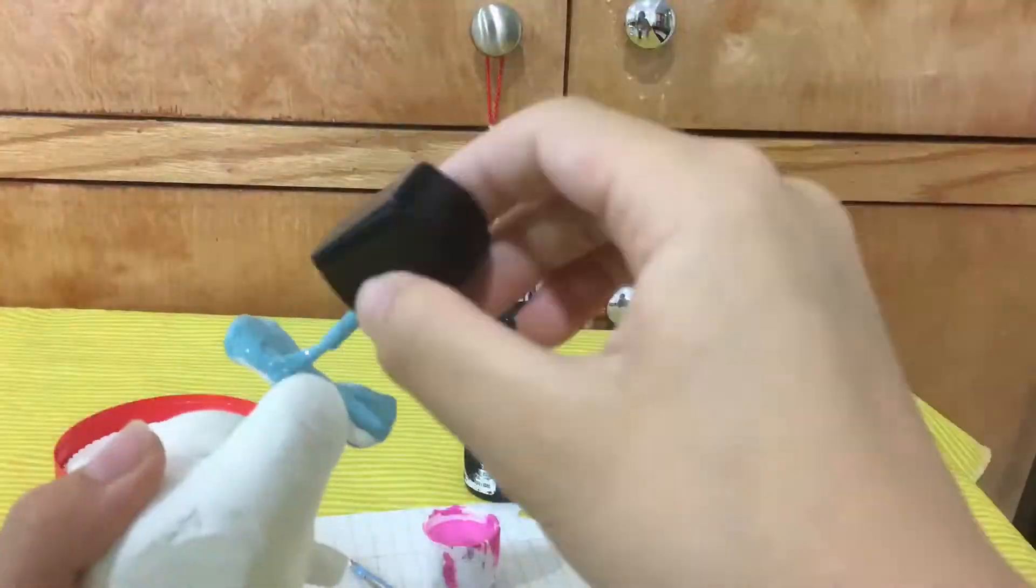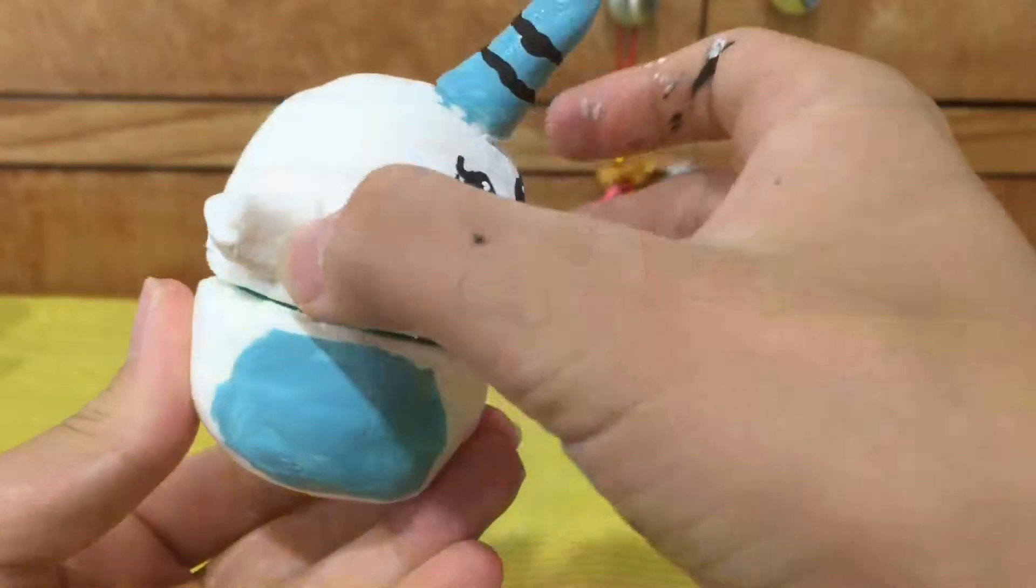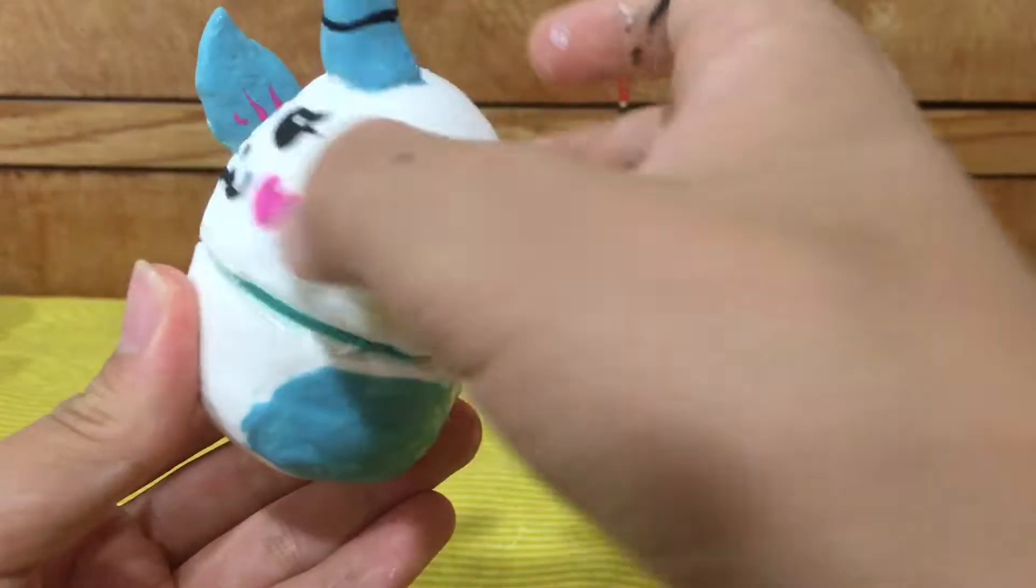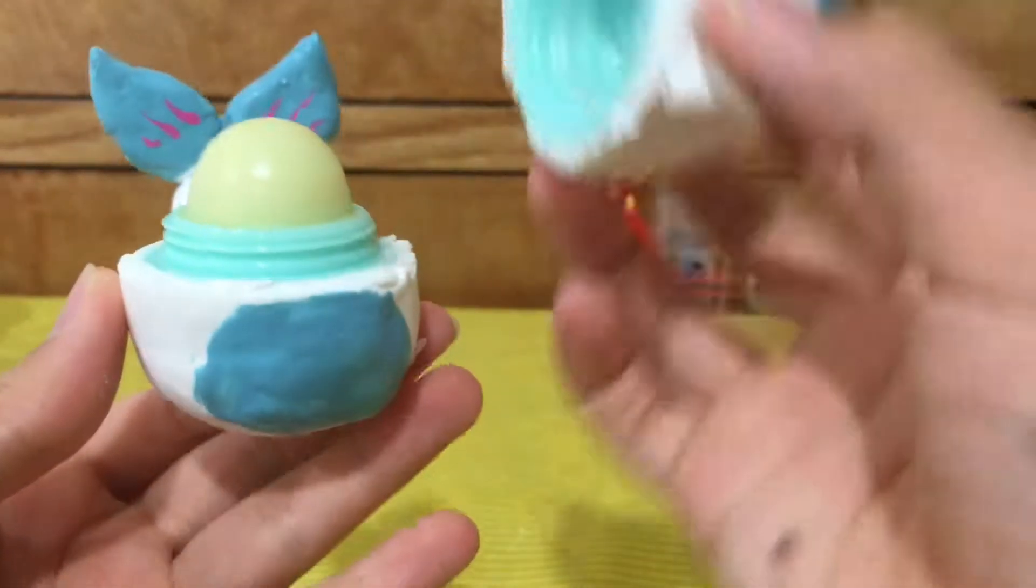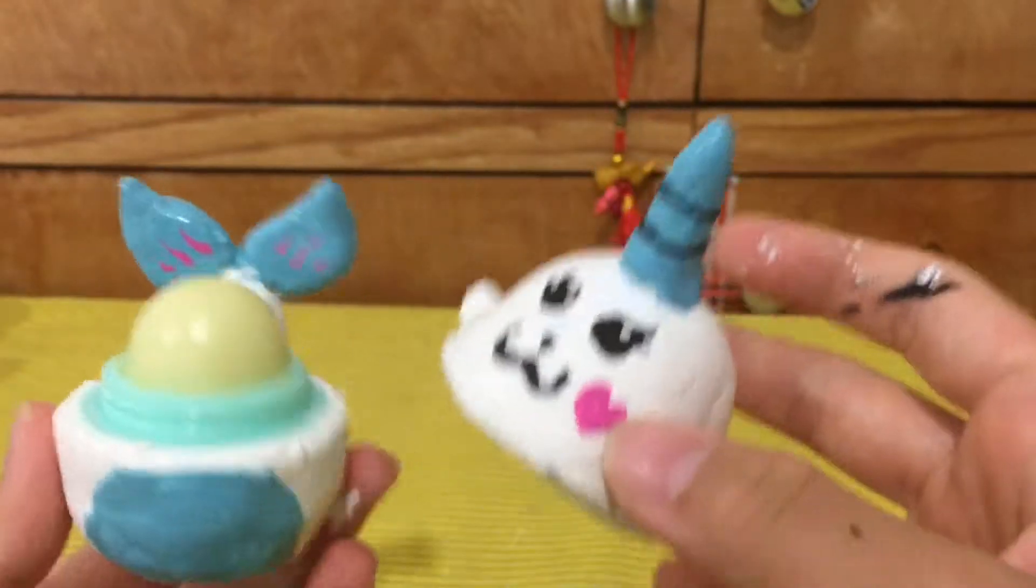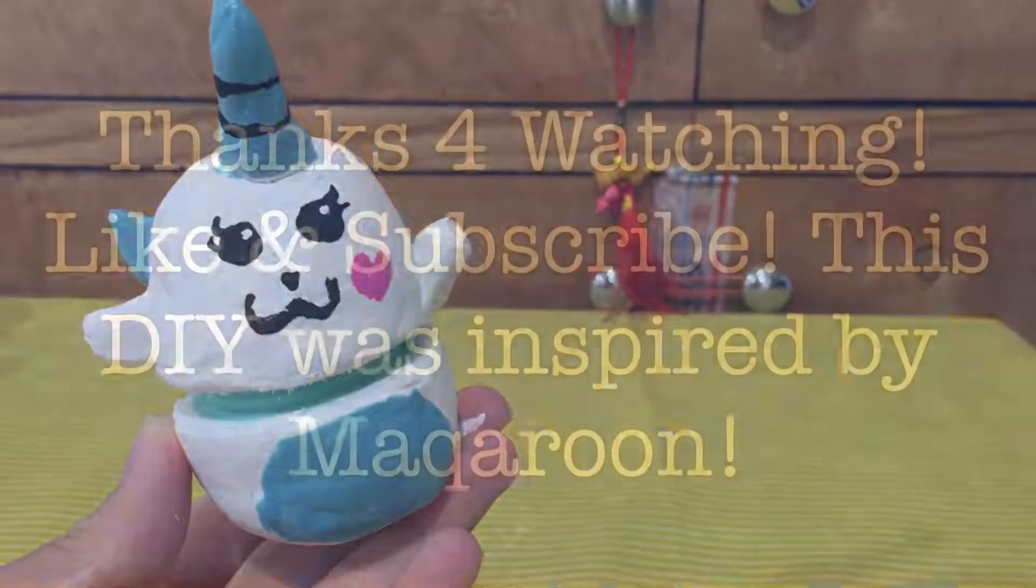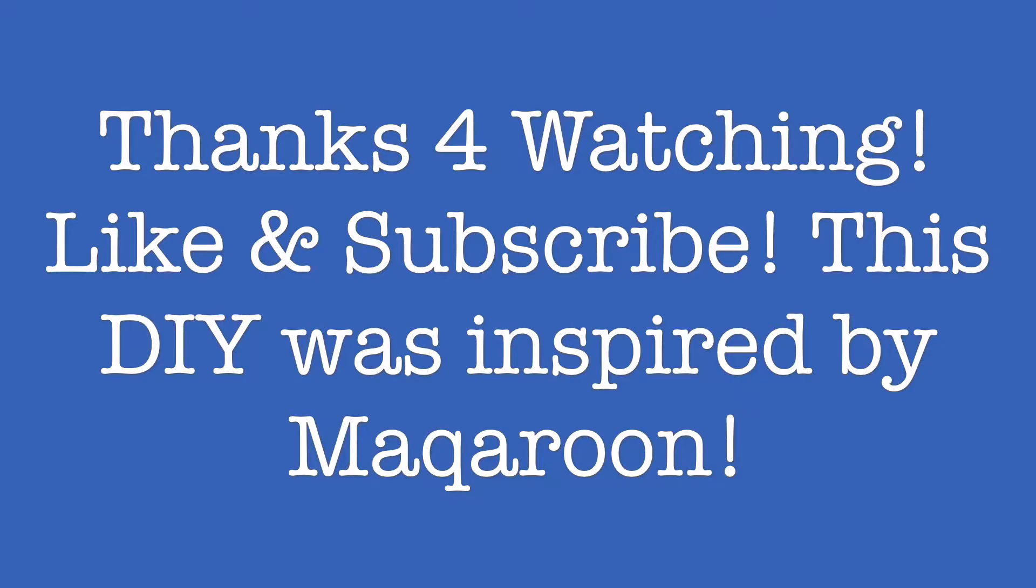Now we're going to make the fins of the tail. Use some water and smush a small piece of clay into the shape of a fin. We're going to make two of them and attach them on the tip of the tail. Do the same for the other one. Here I have both attached.